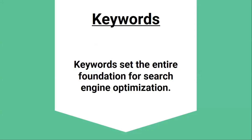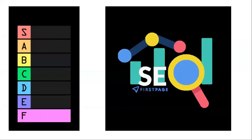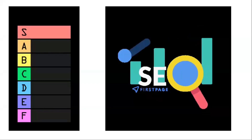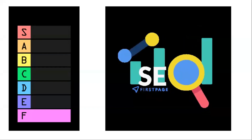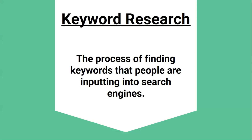Keywords are really important in SEO because they set the entire foundation for search engine optimization. The basic goal of SEO is to rank your pages for keywords that your target audiences or customers are searching for. And if you are not ranking for keywords that actually get searched, then your SEO efforts are kind of meaningless. Keyword research is the process of finding keywords that people are inputting into search engines, and we'll get into this process in the upcoming lessons.